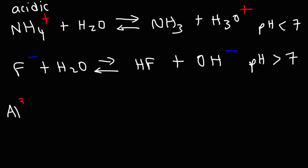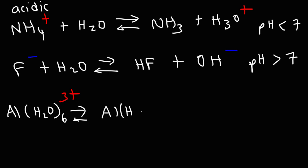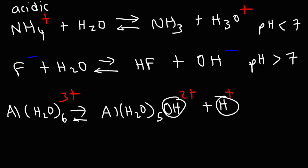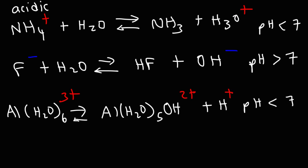The aluminum 3+ cation in water is surrounded by six water molecules. The net charge is still 3+. But aluminum has the ability to ionize one of the water molecules attached to it, creating Al(H2O)5OH with a 2+ charge, and releasing an H+ ion into the solution. Notice that one of the water molecules was broken into OH and H, and this H+ can pair up with another water molecule to become H3O+. The net result is that the pH will be less than 7. That's why metal cations with high positive charges tend to be acidic in water — they can ionize water, generating H+ or H3O+ in solution.